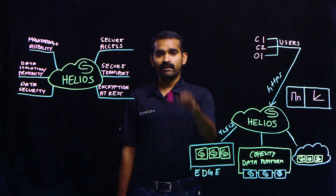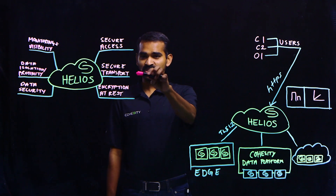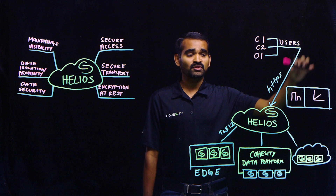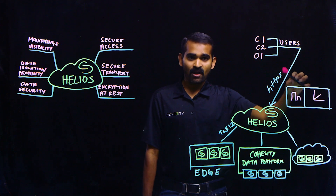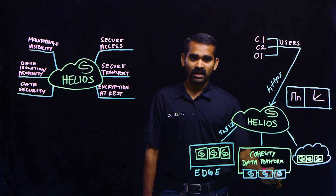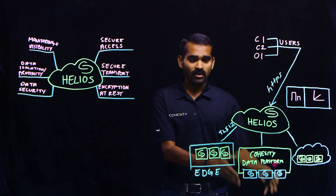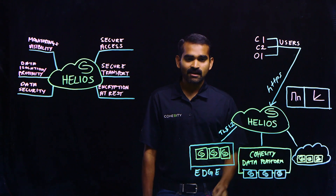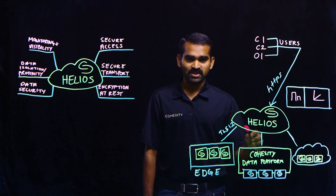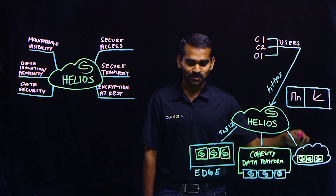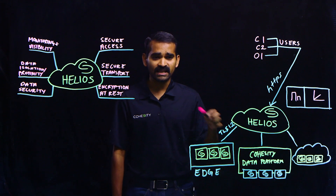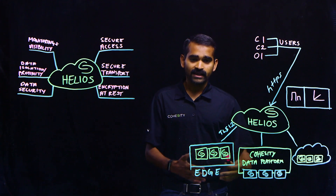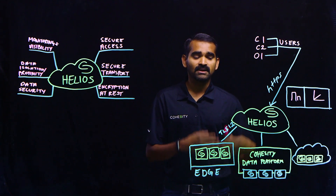Let's move on to the next layer of security, which is secure transport. The connection to the Helios environment can come either from a user through a browser, or from the Cohesity data platform running on-prem, at the edge, or in the cloud. All these connections are HTTPS over TLS 1.2.